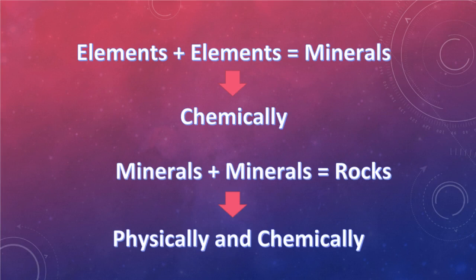As a recap, minerals are made chemically by different elements, and with rocks as our topic today, these materials are made by combining one or several minerals physically and chemically. We all know that some rocks and minerals have great economic value and are raw materials that we have been using throughout the years. A basic knowledge of earth materials is therefore essential to understanding most geologic phenomena like volcanic eruptions, mountain building, earthquakes, etc. Every rock contains clues about the environment in which it was formed. Thus, rocks contain a wealth of information about events that have occurred over Earth's long history.